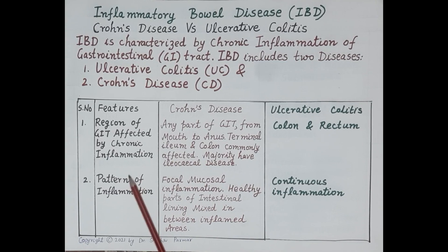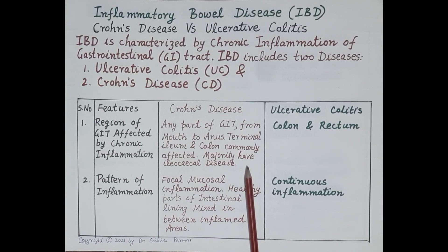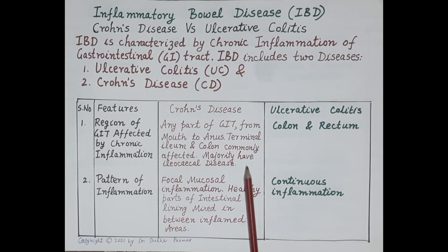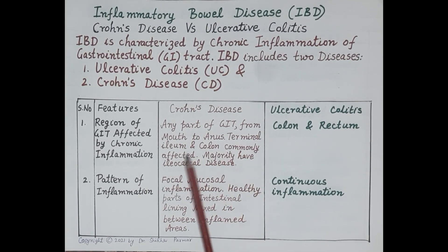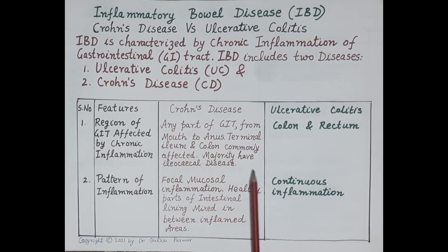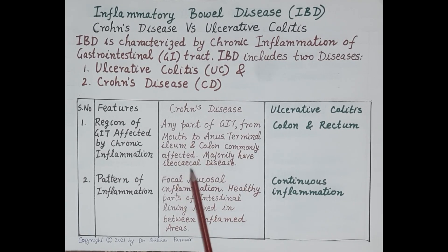The first feature to discuss is the region of the gastrointestinal tract affected by chronic inflammation. In Crohn's disease, any part of the GIT from mouth to anus can be affected. The terminal ileum and colon are the most affected parts. The majority of patients suffer from ileocecal disease — that is, inflammation in the wall of the ileum and the cecum, which is the first part of the colon.